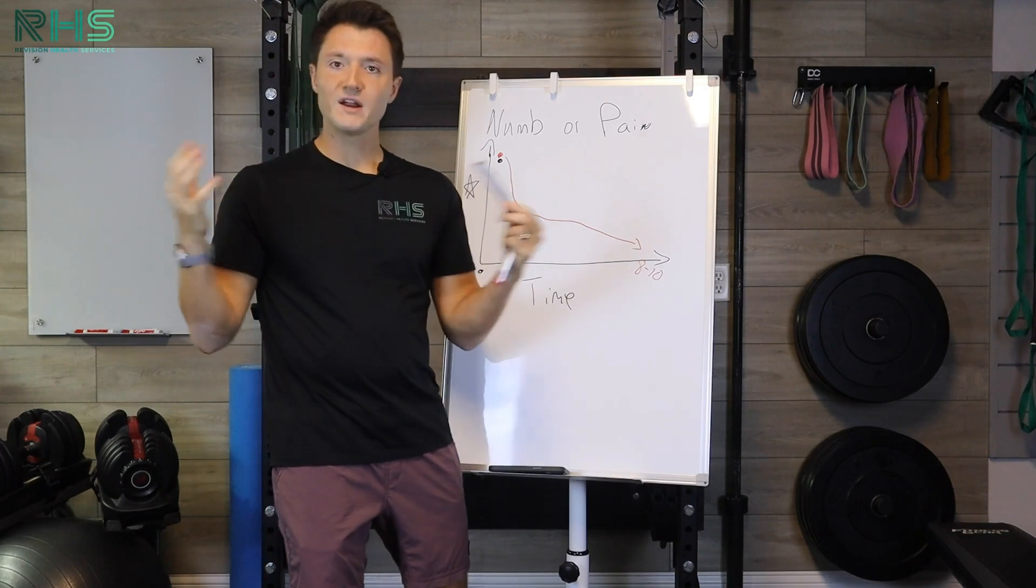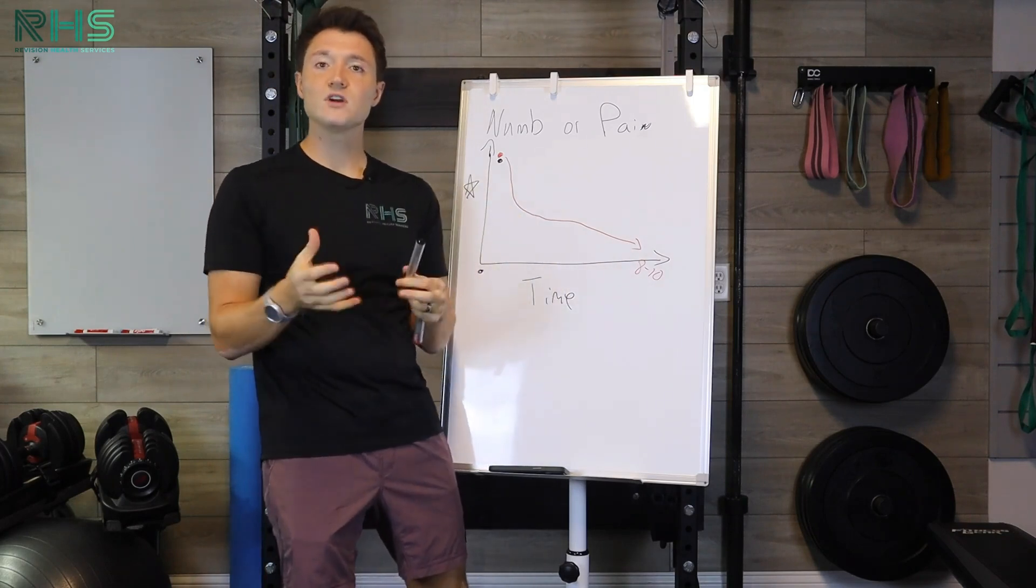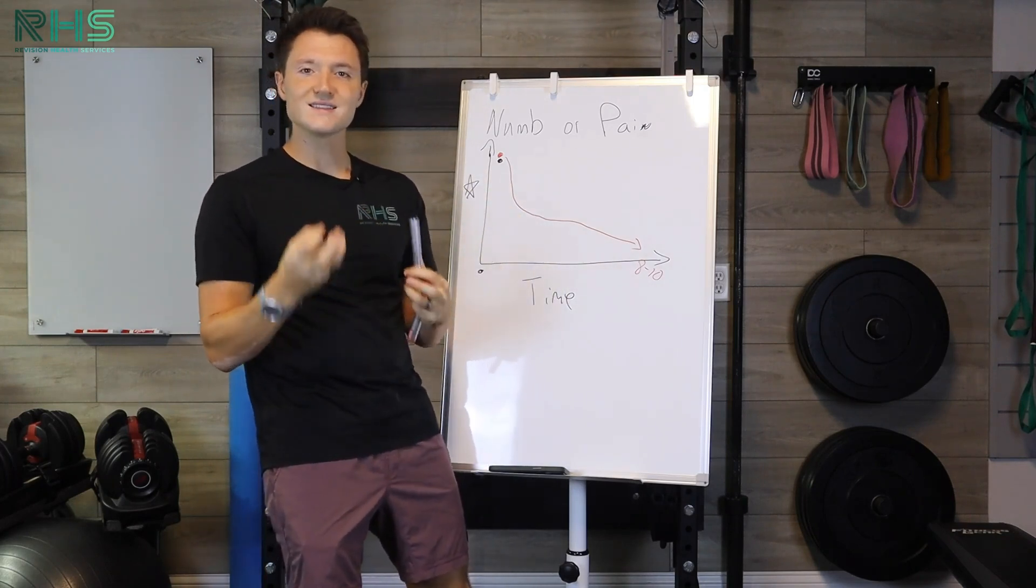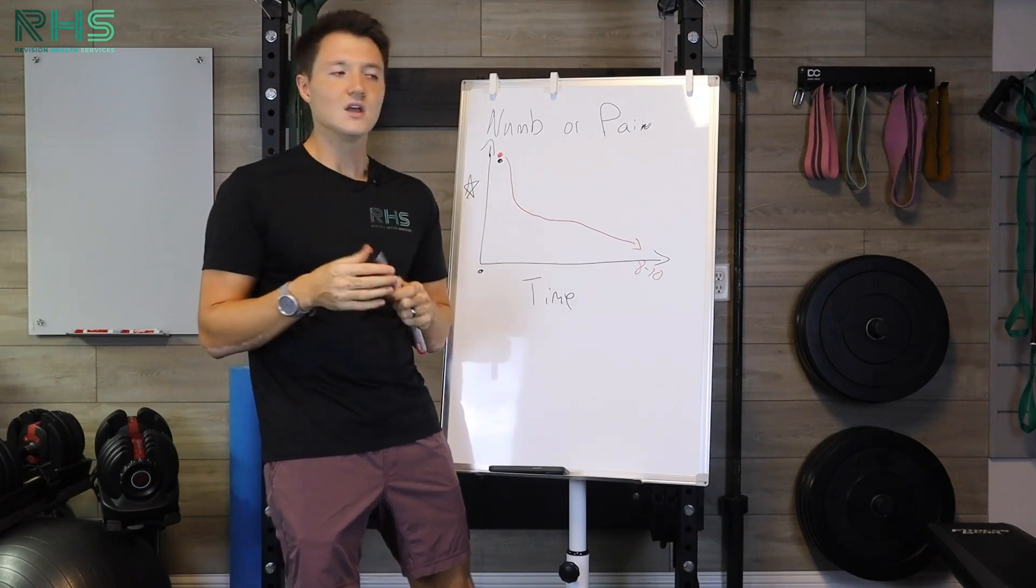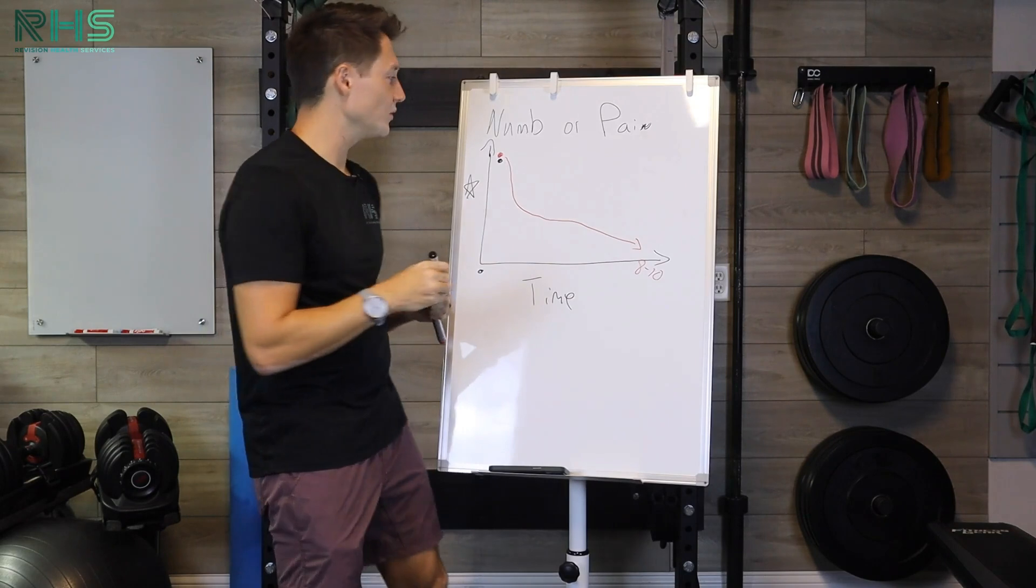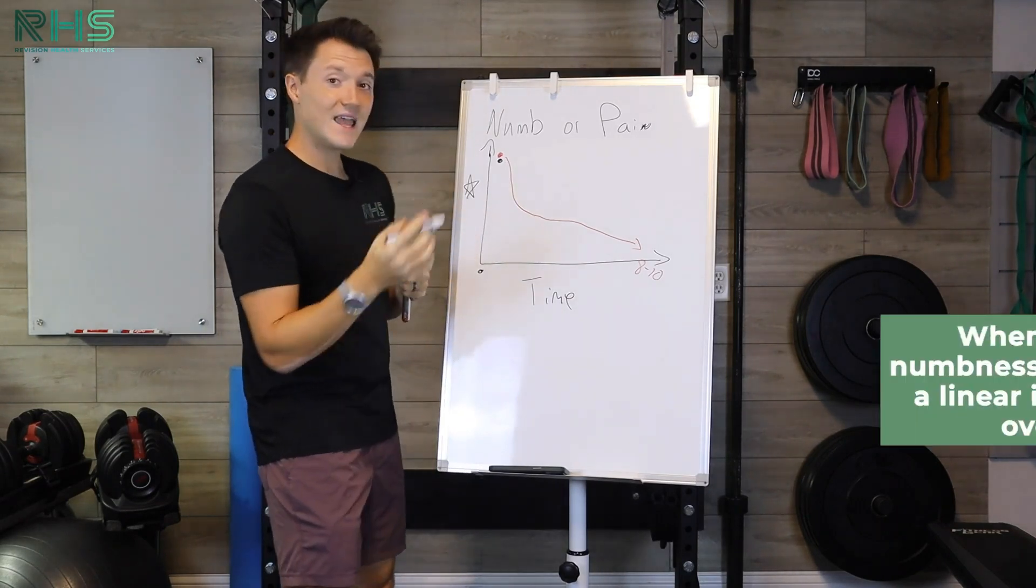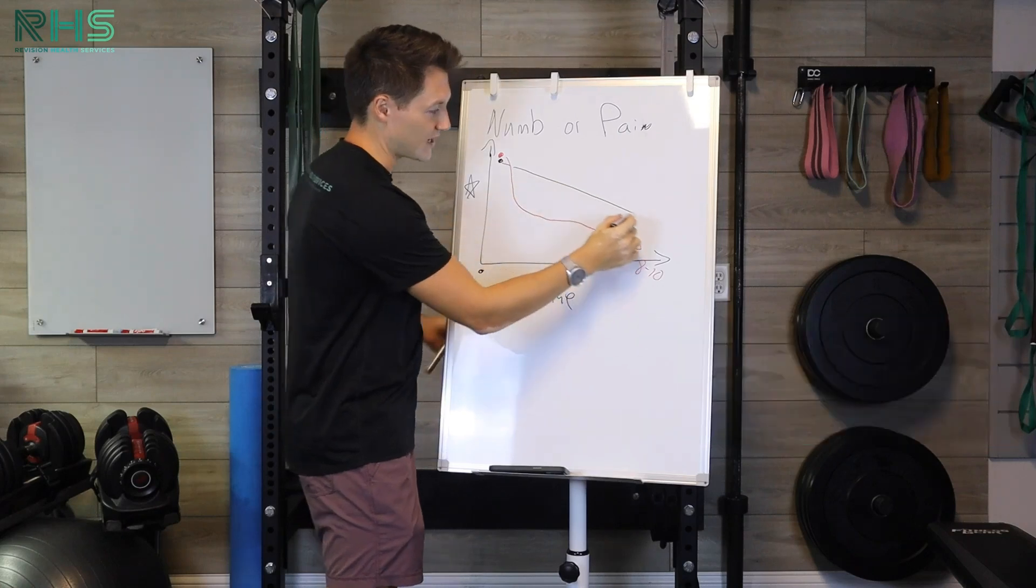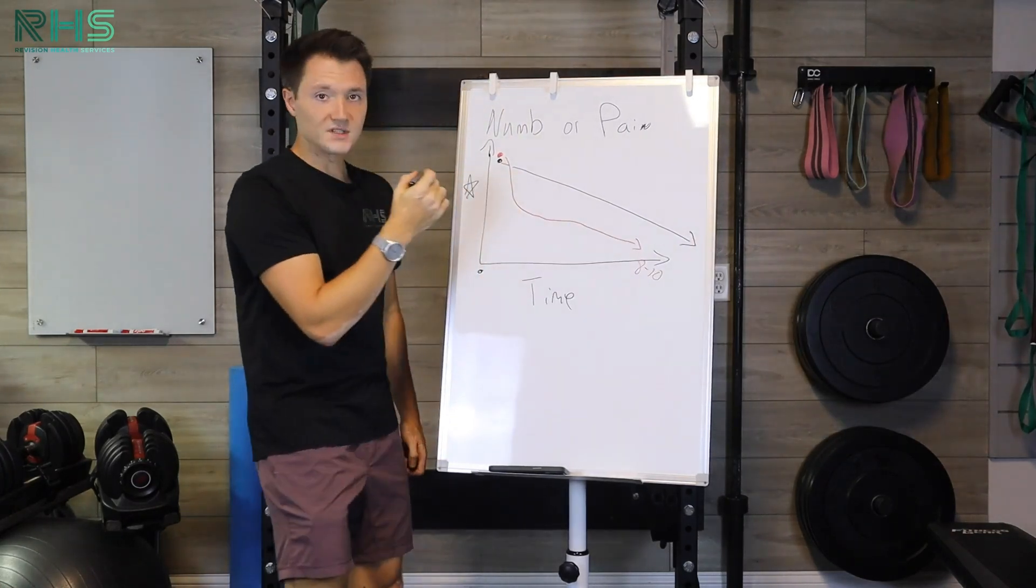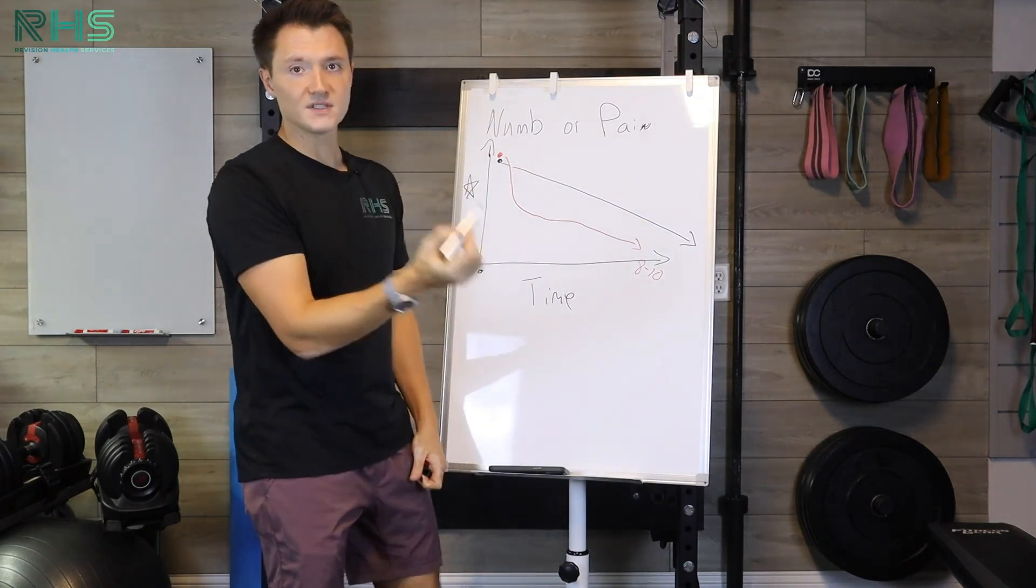Now let's circle back to that, but then let's talk about numbness. And so numbness comes from the, it's called paresthesias. And so it comes from the compression onto the nerve and it's causing the signal of the nerve to that area to be a little diluted. It's a little off. And so when you're having that numbness, it tends to just be more of a linear discomfort, a linear improvement over time. And so you'll notice a gradual recovering that numbness.